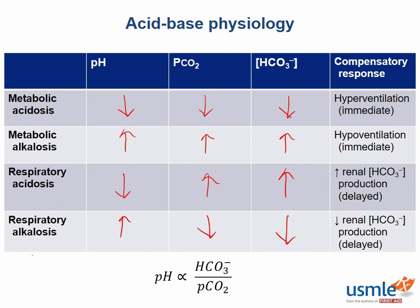Remember that a metabolic acidosis has a low bicarb as the primary disturbance, and this causes hyperventilation to get rid of CO2 as compensation. The reverse is a metabolic alkalosis, which has high bicarb as the primary disturbance, and this causes hypoventilation to hold on to CO2 as compensation. For respiratory conditions, the compensatory responses happen in the kidney, which can increase or decrease the amount of bicarb reabsorbed. One important point is that metabolic compensation takes 24 to 48 hours, whereas respiratory compensation by a change in breathing can happen immediately.